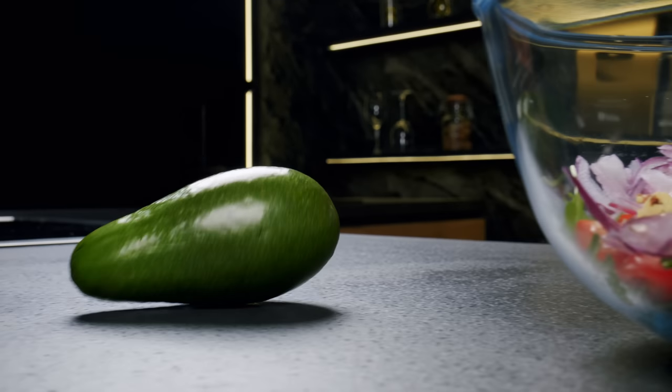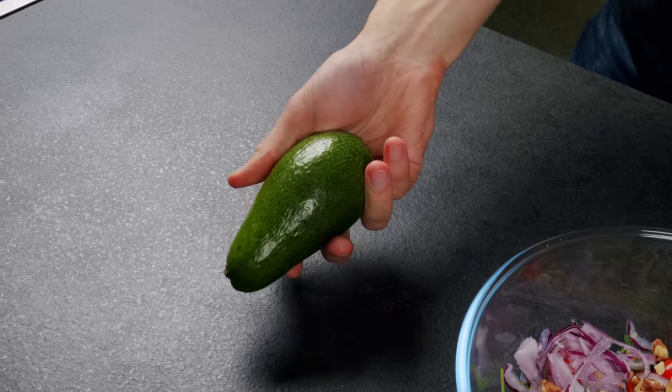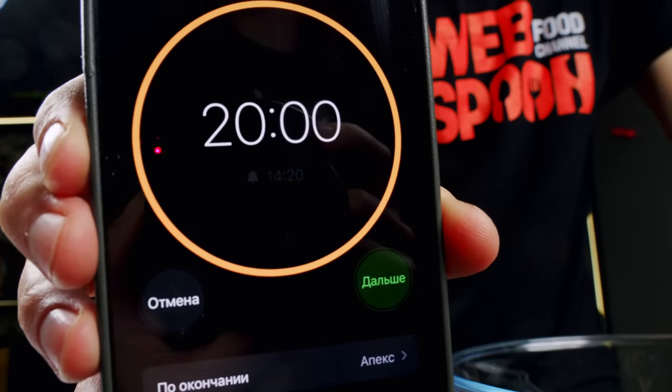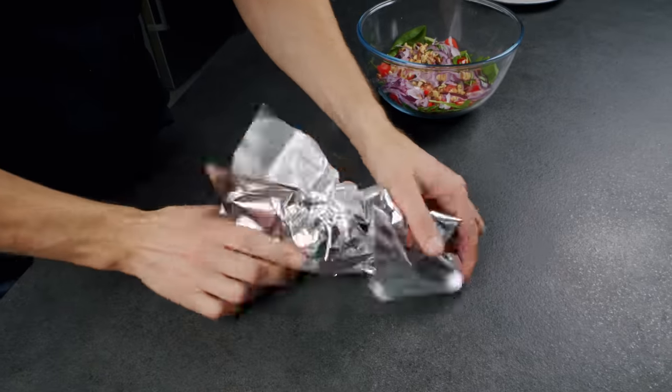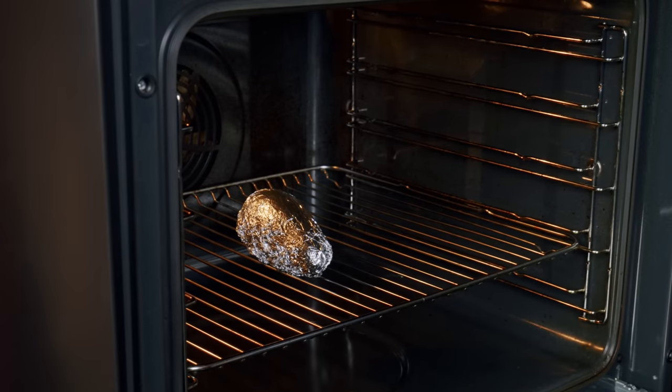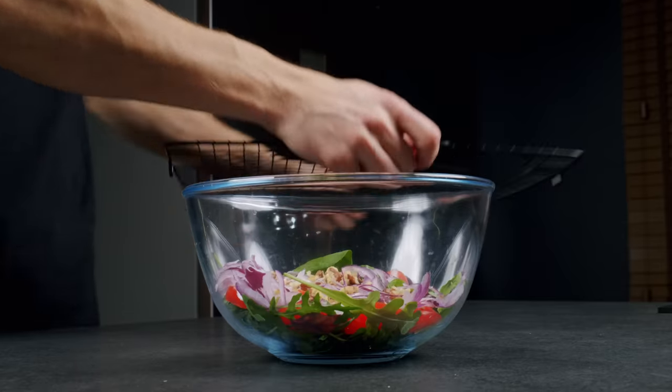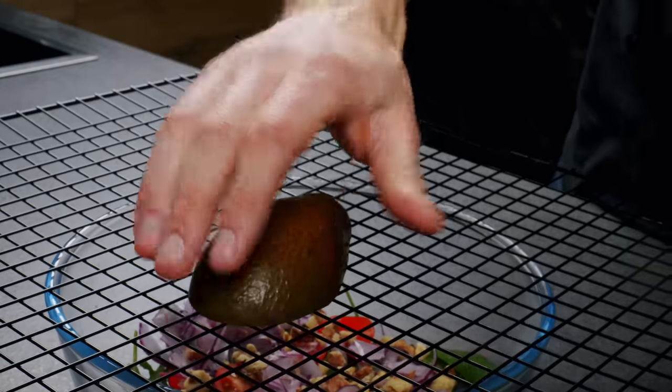Well, what is a salad without avocado? If your avocado is as hard as mine, there is a great way to make it soft in just 20 minutes. To do this, wrap it in foil and place it in an oven preheated to 100 degrees Celsius for 20 minutes. Don't worry, the avocado will not be cooked, but it will become softer and tastier.